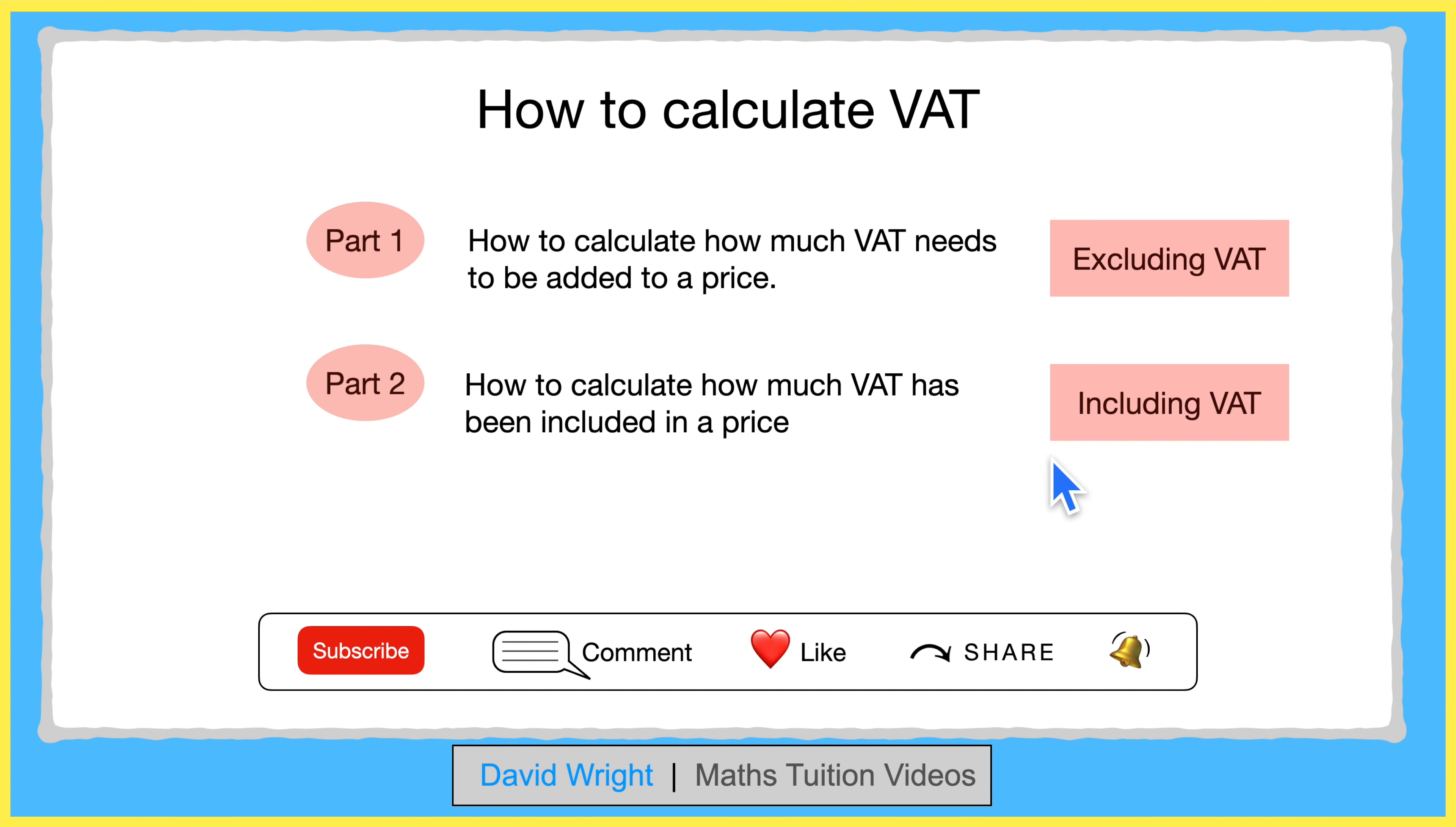So let's begin with part one, where we'll work out how much VAT should be added to a price. The amount varies and is set by the government. For example, it could be 15%, 17.5%, 19% or as high as 20% or perhaps even higher.